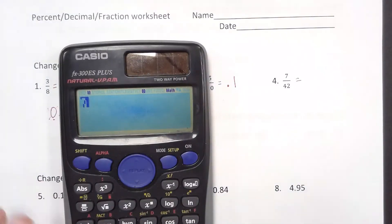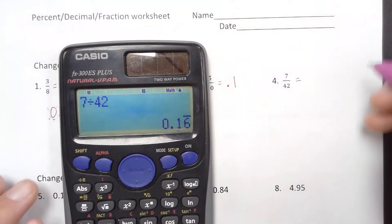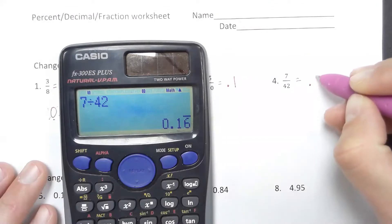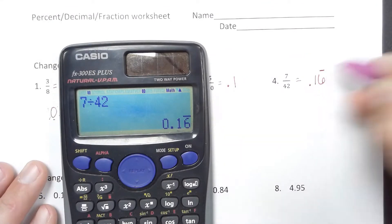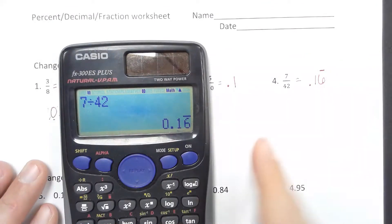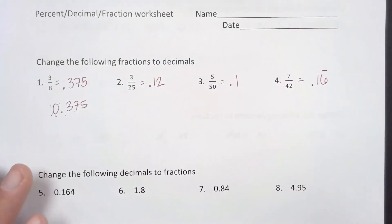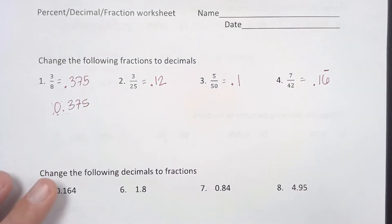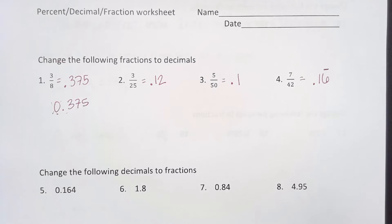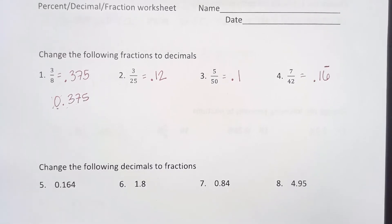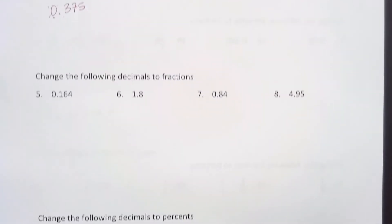Let's see how you guys did on number four. If you took 7 divided by 42, you should have gotten 0.16 repeating. You do need to put that repeating bar if they don't tell you to round. So converting from fractions to decimals — you just divide and then write down that decimal.